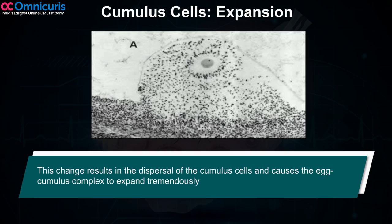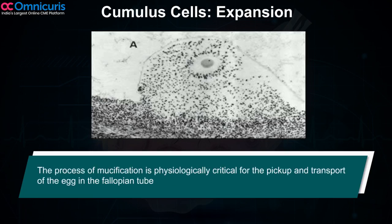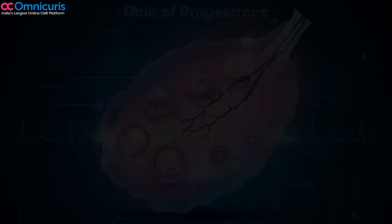This change results in the dispersal of the cumulus cells and causes the egg-cumulus complex to expand tremendously. The process of mucification is physiologically critical for the pickup and transport of the egg in the fallopian tube.